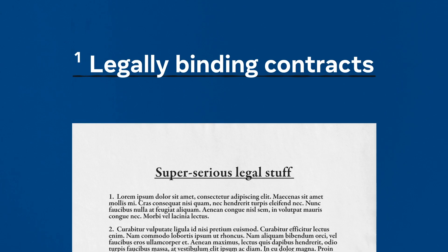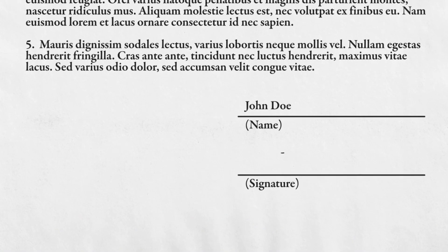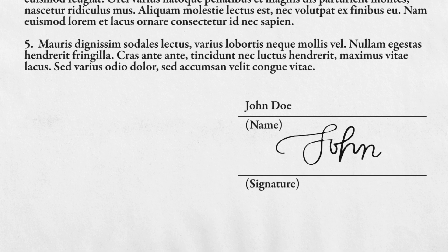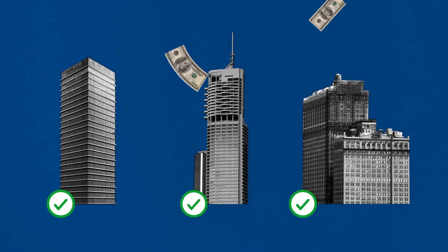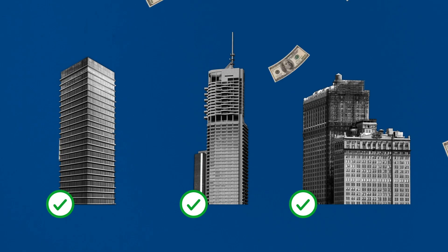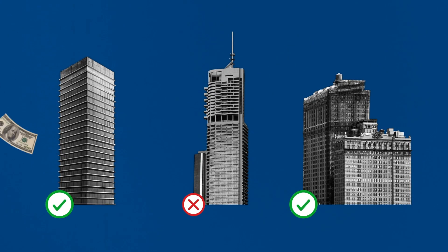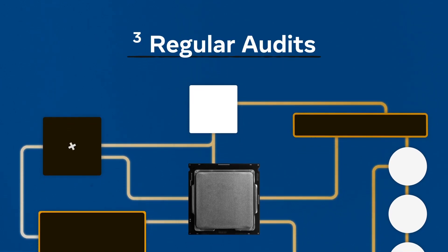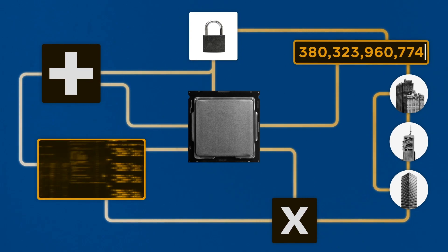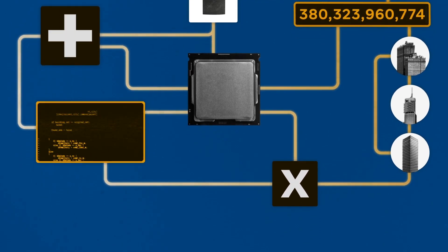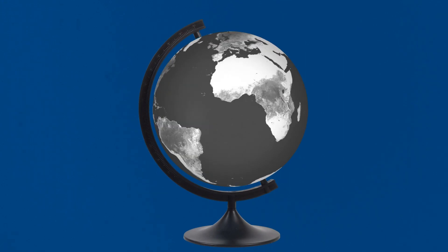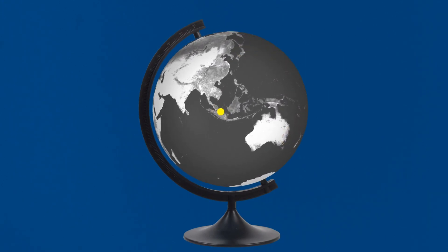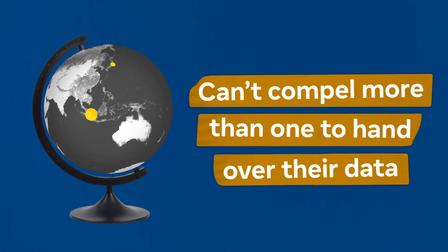We can reduce the risk of these things happening in a few ways. First, we can require the three organizations to sign legally binding contracts that carry serious liability if they ever collude with one another. Second, we can provide a financial incentive not to collude by only allowing accredited organizations to get paid to operate the MPC. That way, losing your accreditation would mean losing out on future earnings. To maintain their accreditation, organizations would need to submit to regular audits that ensure they're following industry best practices, like using hardware protection mechanisms, access restrictions, and key rotation. And finally, we can make sure that the three organizations are all located in different legal jurisdictions, so that no single government has the authority to compel more than one to hand over their data.